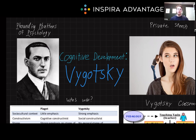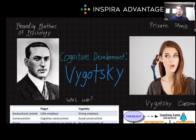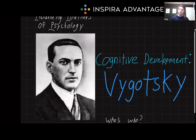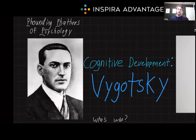Today, we're exploring an essential topic in developmental psychology, focusing on Lev Vygotsky's theory of cognitive development. Vygotsky, a Russian psychologist — this guy on the left here — offered a unique perspective emphasizing the roles of social interaction, cultural context, and shaping cognitive growth.